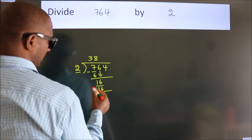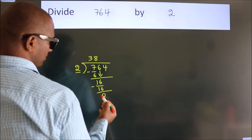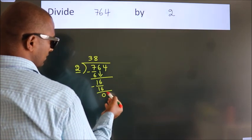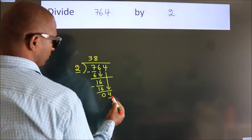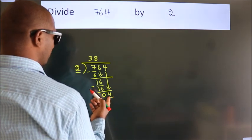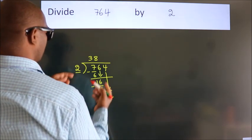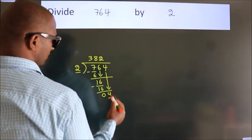Now we subtract. We get 0. After this, bring down the beside number. So, 4 down. So, 4. When do we get 4? In the 2 table, 2 twos, 4.